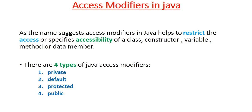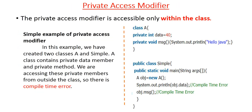We will discuss all those access modifiers with examples so we can understand how they work and what access levels they have. Starting with the private access modifier — the private access modifier is accessible only within a class. That means if you have more than one class and you have declared a variable, class, or method as private, that particular variable or method cannot be accessed from another class.